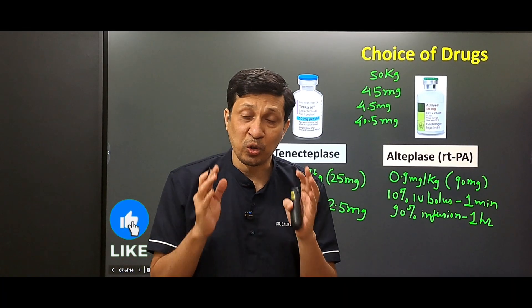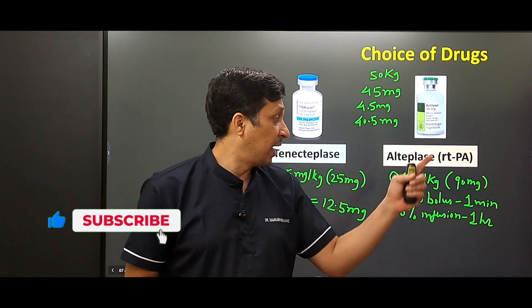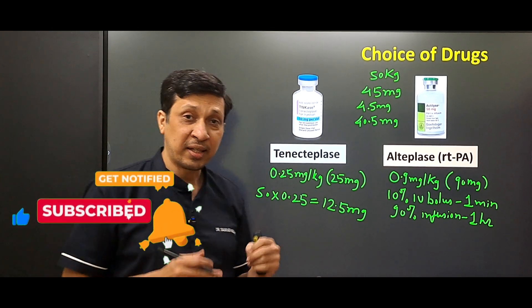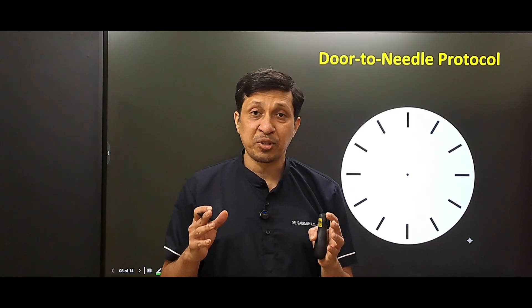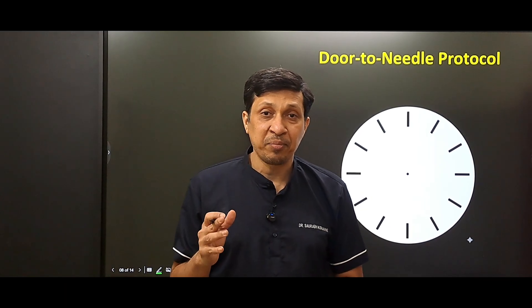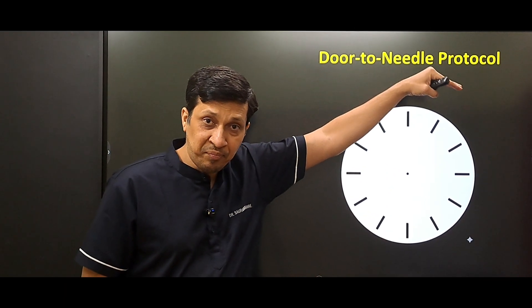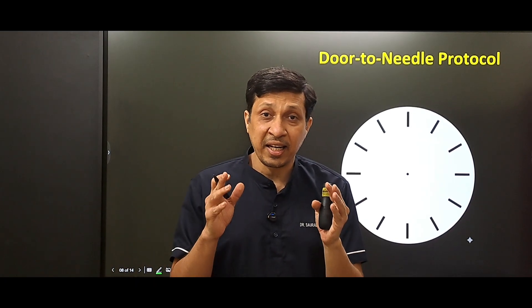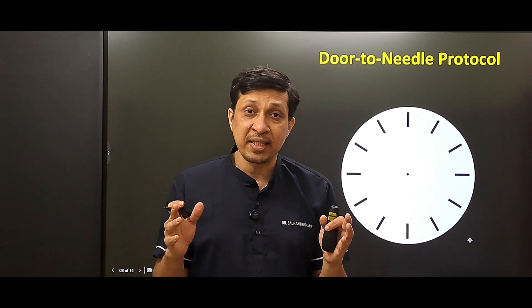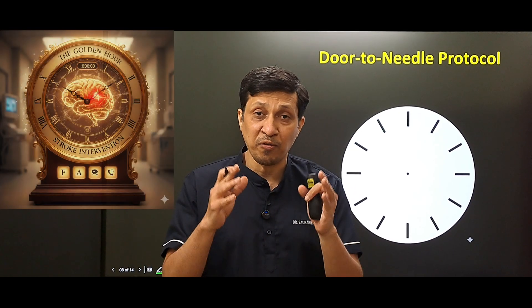For stroke thrombolysis, you have two choices: alteplase as the gold standard, and tenecteplase as the emerging alternative. What matters most is the efficiency of the system — the time from when the patient arrives at the hospital to when they receive the injection, called door-to-needle time. The AHA recommends this should be less than 60 minutes, also called the golden hour of stroke.